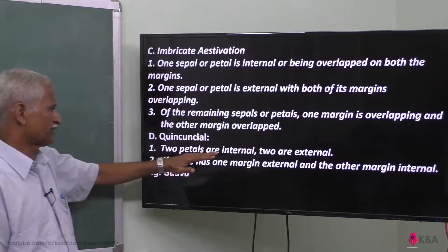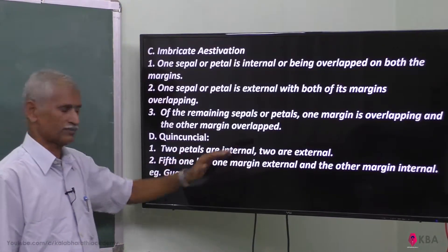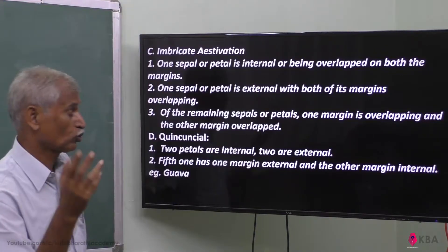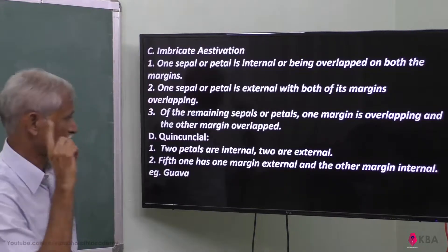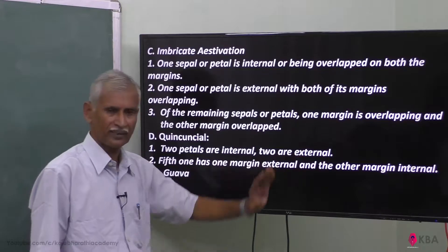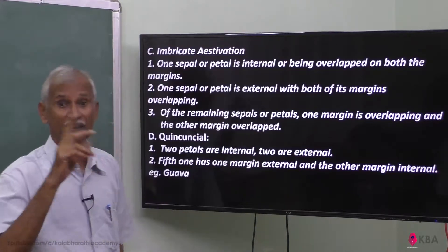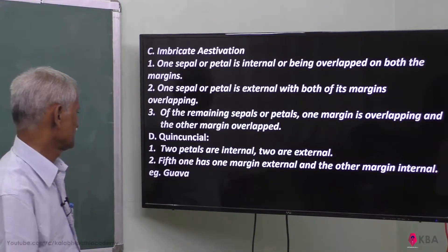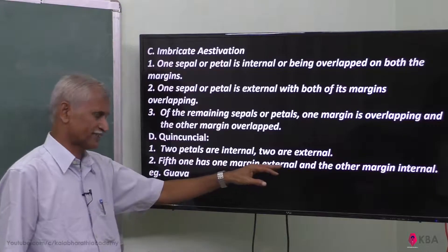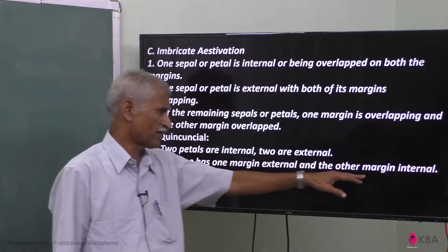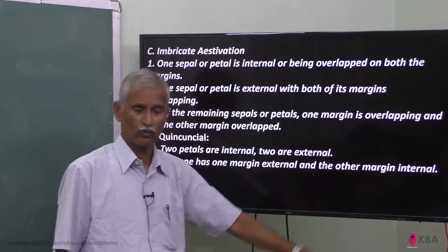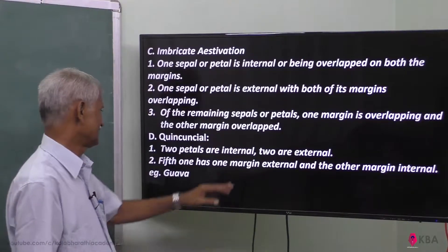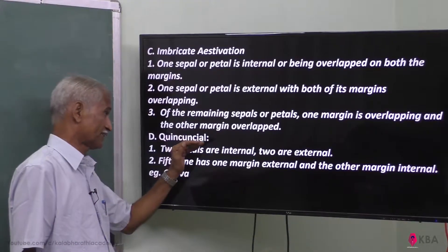When two petals are internal and two petals are external — two are external, two are internal, two are external — the fifth one has one margin external and the other margin internal, one margin overlapped. Example: Guava, with a structure like that.